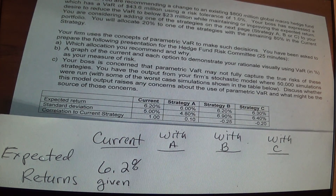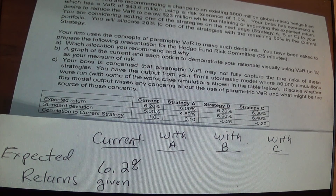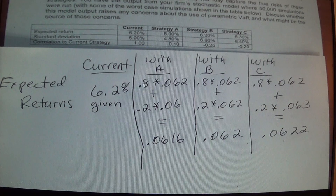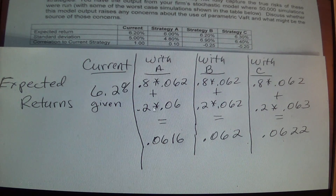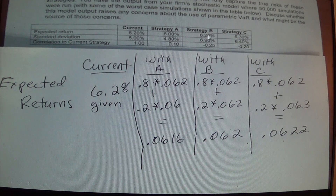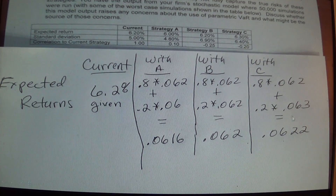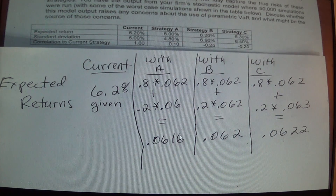To get the expected return, I set up a table with expected returns for current, A, B, and C. The current is 6.2%, as given. For strategy A, we compute 80% times 6.2% plus 20% times 6% — doing everything in decimals to avoid math errors — giving 6.16%. For B, which has an expected return of 6.2% same as current, the result is obviously 6.2%. For C, with an expected return of 6.3%, the combined return is 6.2%. Already we can likely eliminate A since its expected return is less than the current, but we'll continue the math.